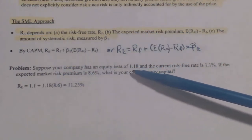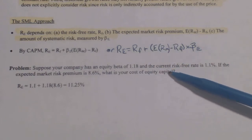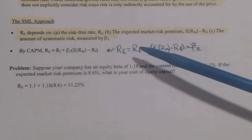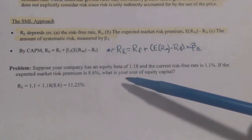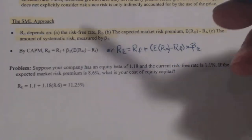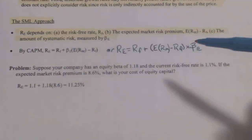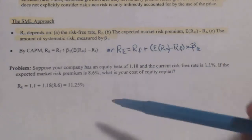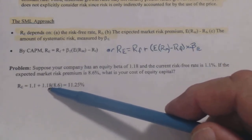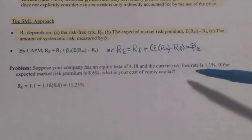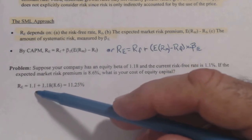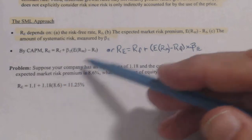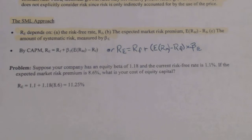Suppose your company has a beta of 1.8, and the current risk-free rate is 1.1%. If the expected market risk premium is 8.6%, what is the cost of equity? Since they gave you the whole expected market risk premium, you substitute that in for that entire expression. So it's the risk-free rate of 1.1%, plus beta of 1.8 times the market risk premium of 8.6%. That comes out to 11.25%. That's page 83 of the Business 342 workbook lecture.